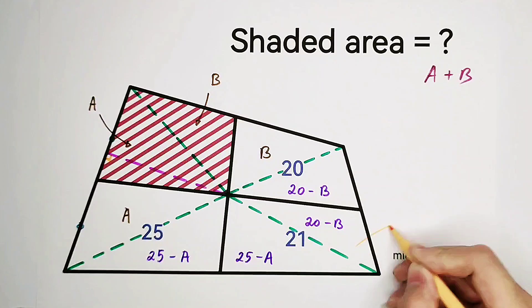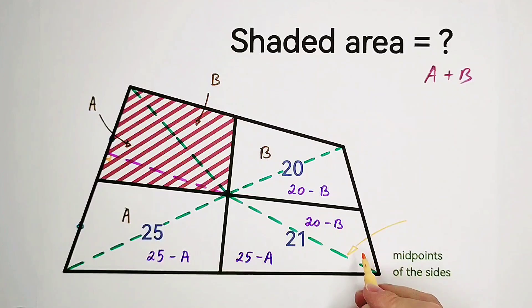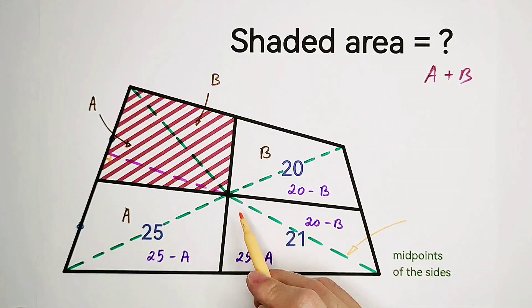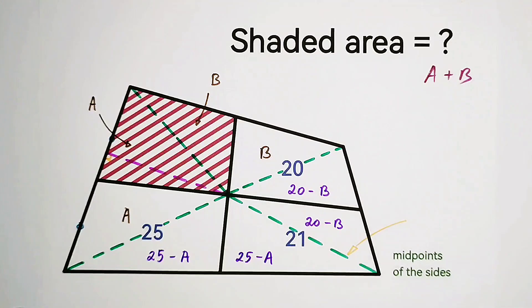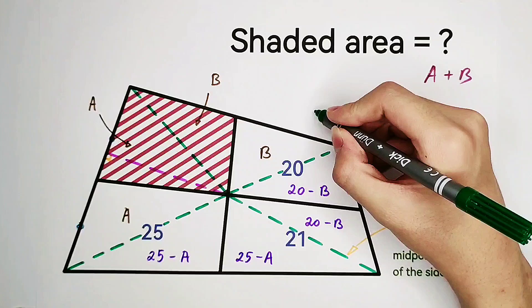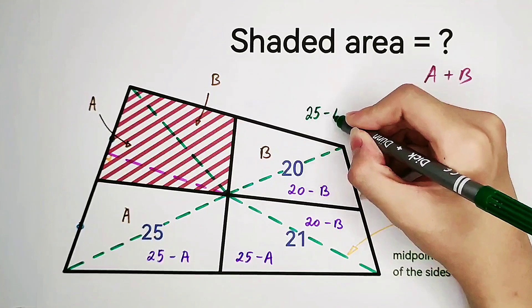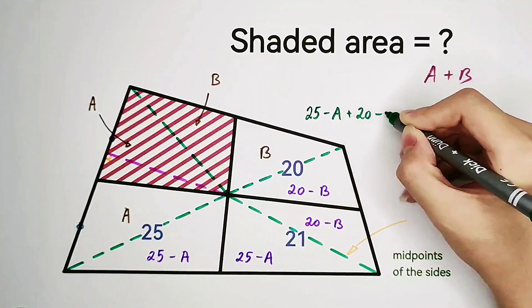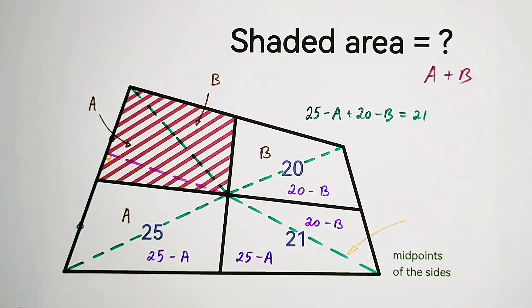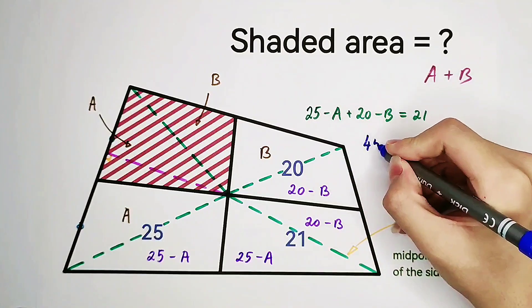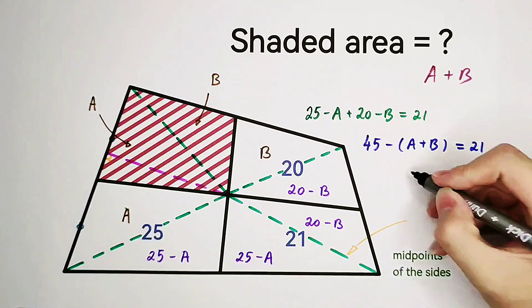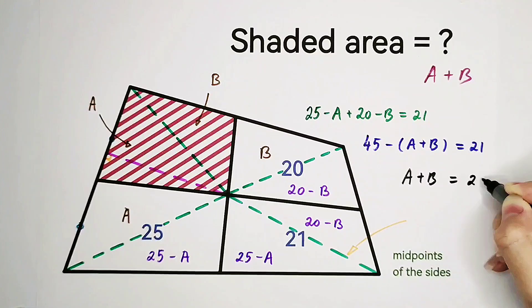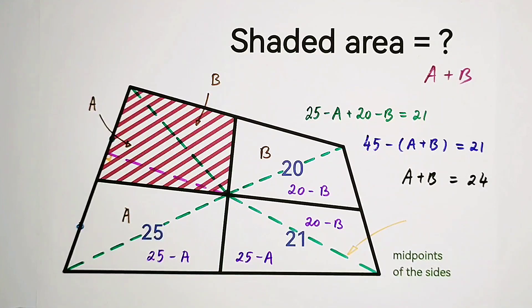At last, we focus on this quadrilateral. In this quadrilateral, this triangle plus this triangle is its area. However, its area is also 21. So now, we have an equation. That is 25 minus A plus 20 minus B equals 21. It is 45 minus the sum of A and B equals 21. Very easy. A plus B is just 24. So that means our shaded area is 24.